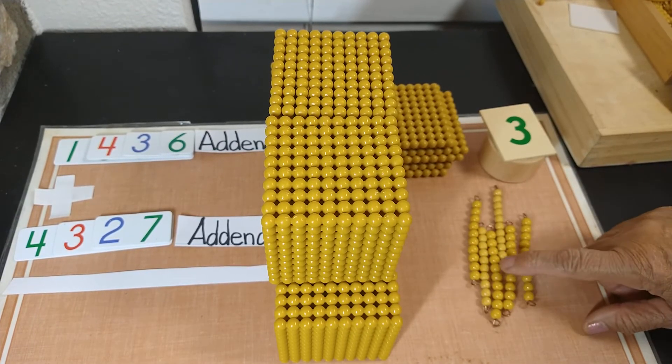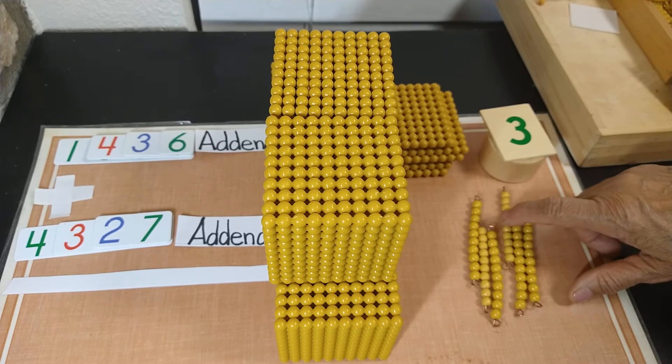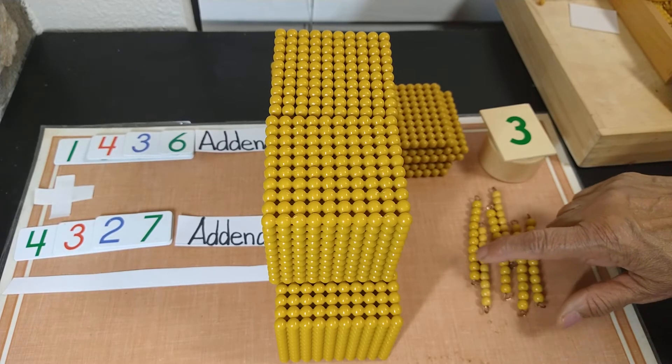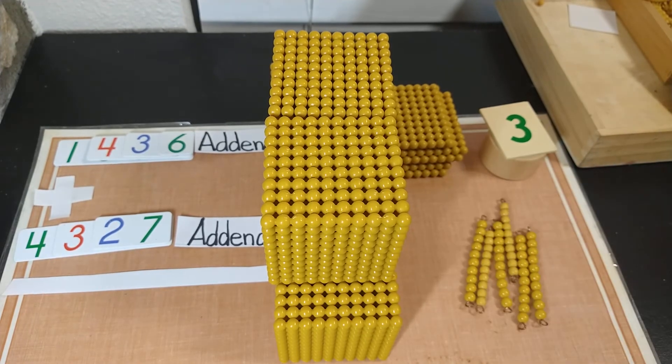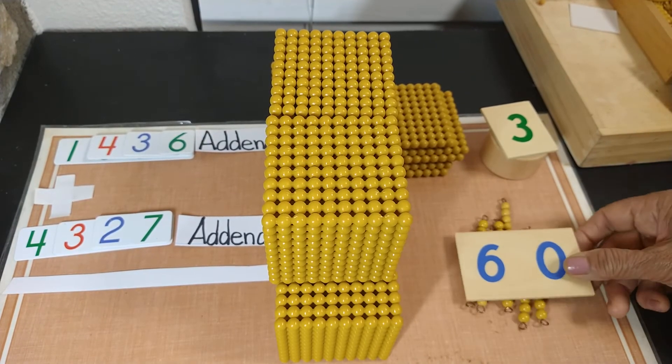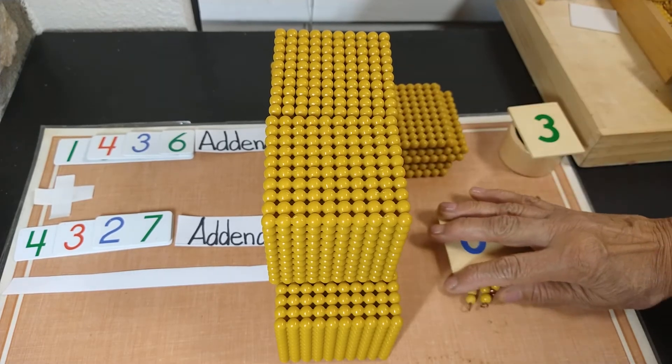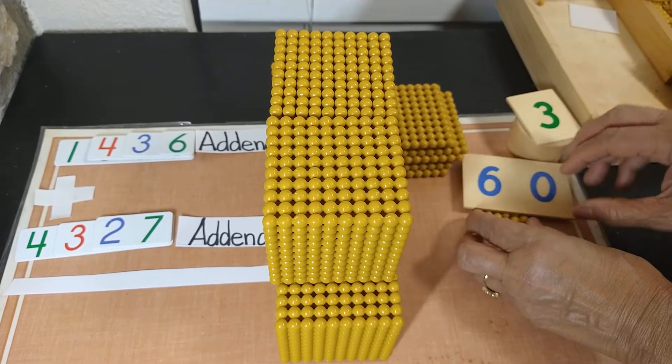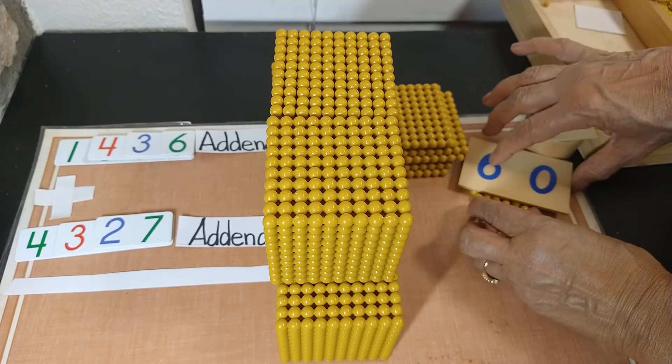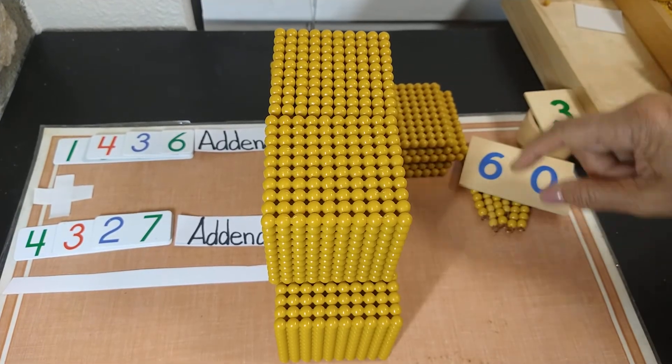1,10, 2,10, 3,10, 4,10, 5,10 and 6,10. So 6,10 makes what? 60. So we got 6,10 here. Let me make space. Then we can fix this 10 also here. Okay.